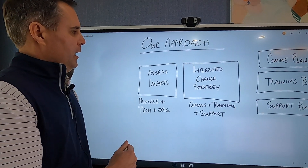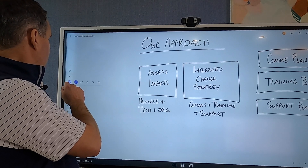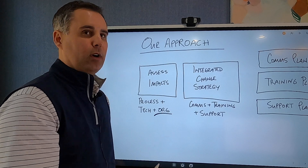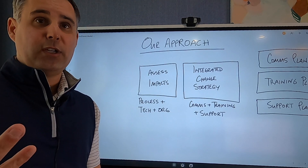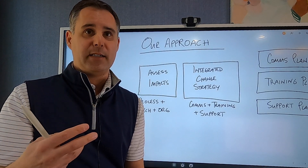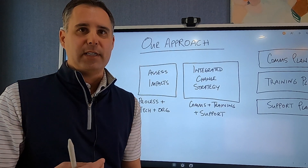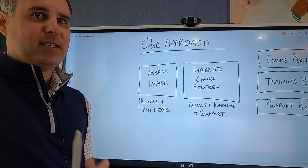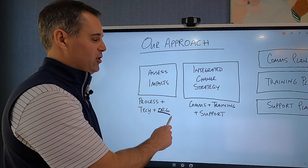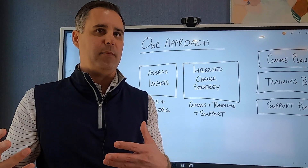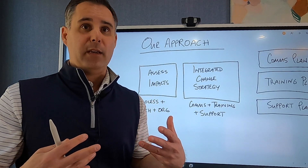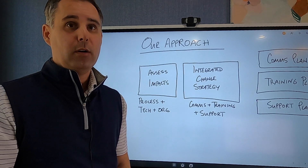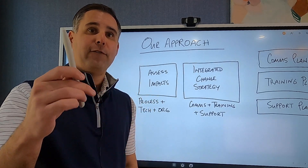The first thing we do is assess the impacts — looking at process impacts, technology impacts, and organizational impacts associated with whatever this project is. Sometimes it's not a technology project; maybe you're doing an organizational redesign or launching a new business unit. We go through each step and diligently assess across these areas, giving an impact rating of high, medium, and low across different functions of the organization.